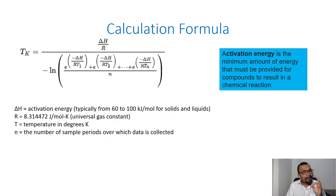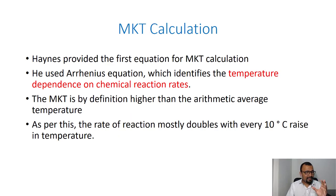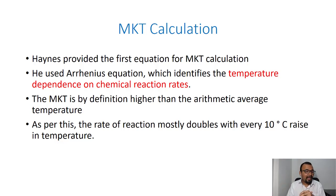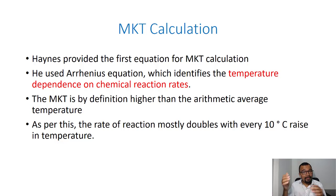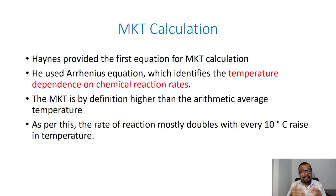The activation energy is the minimum amount of energy that must be provided for compounds to result in a chemical reaction. Haynes is the scientist who provided the first equation for MKT calculation, and he used the Arrhenius equation, which defines the temperature dependence on chemical reaction rates. The first important assumption is that whatever chemical degradation is going to happen is actually dependent on temperature. MKT is by definition higher than the arithmetic average temperature.